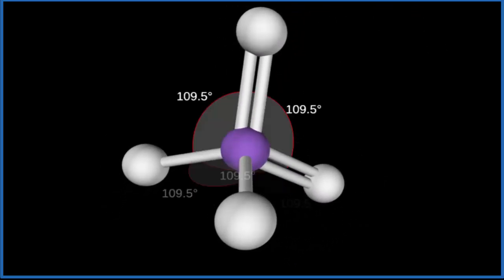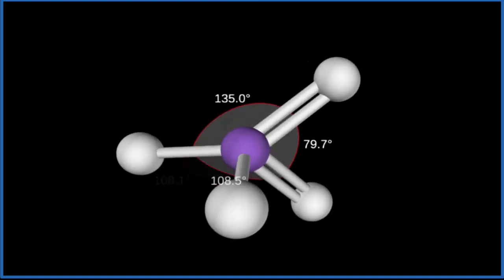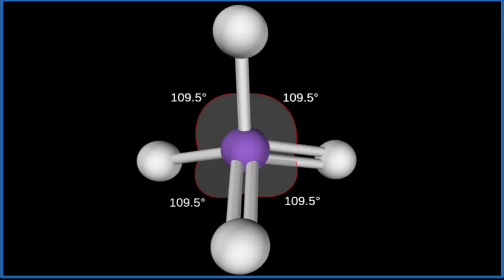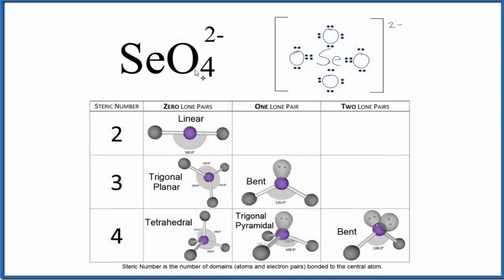The bond angles for that should be about 109.5 degrees. Since this is tetrahedral and there are no lone pairs on the central atom, the electron geometry would also be tetrahedral. Let's go back to our Lewis structure.